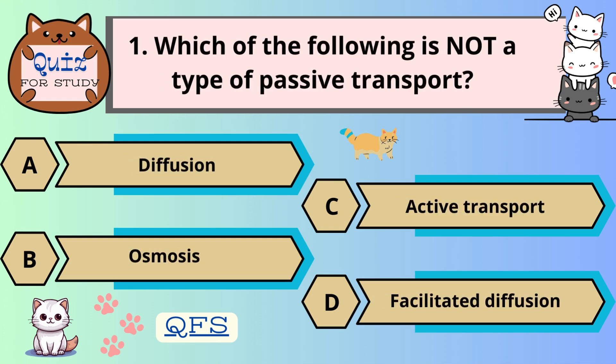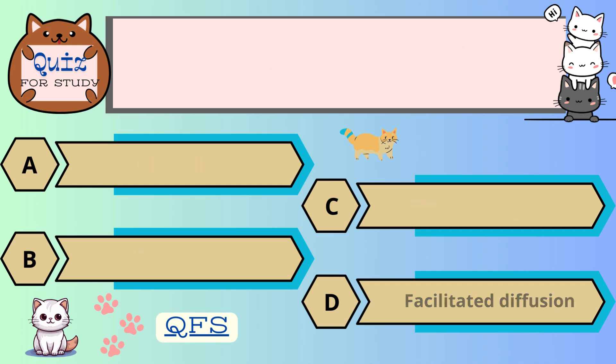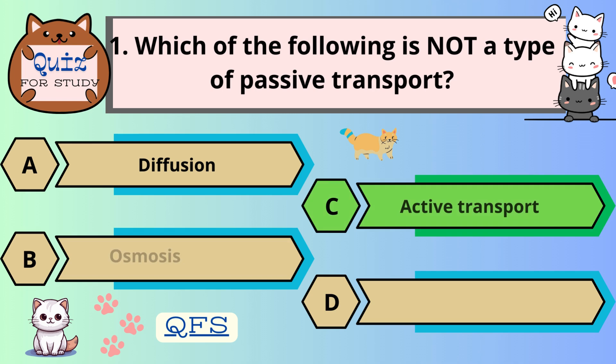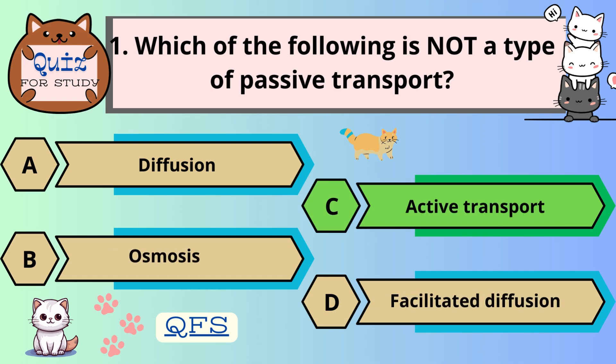Number 1. Which of the following is not a type of passive transport? The correct answer is C. Active transport.